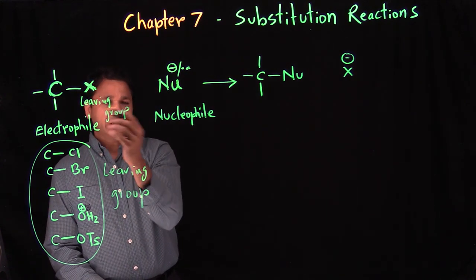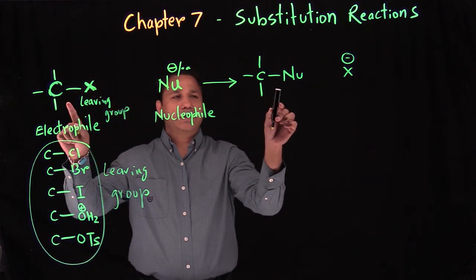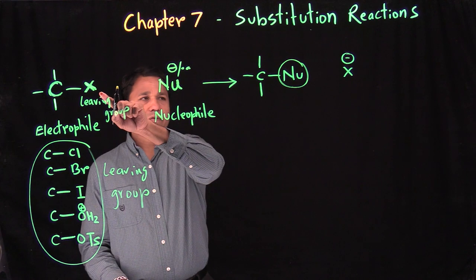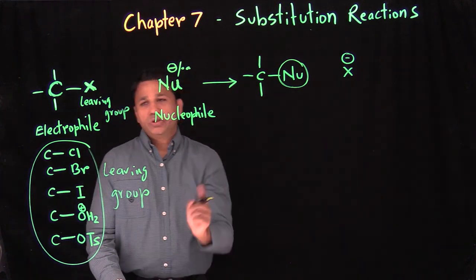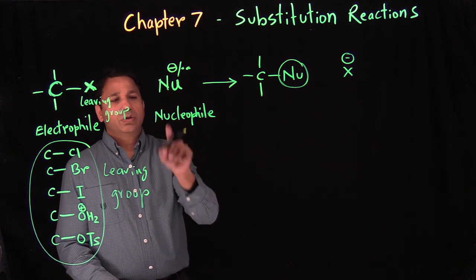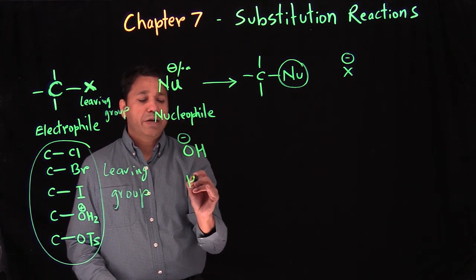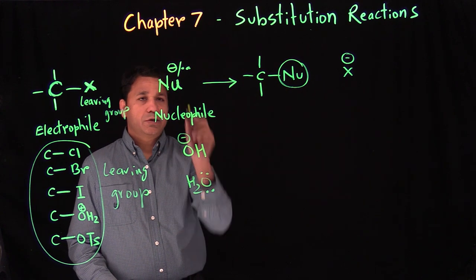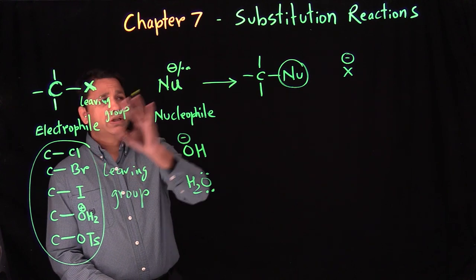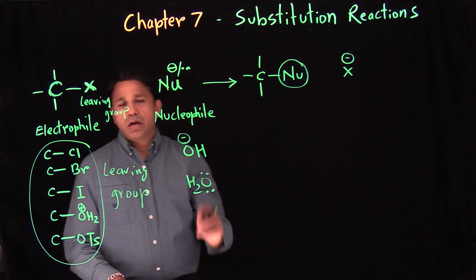The name 'leaving group' tells you it has to leave, and the nucleophile takes its place. Comparing starting material and product: the nucleophile has taken the place of the leaving group — that's why we call it a substitution. For example, the nucleophile can be OH minus (a negative charge) or water (an electron pair). Either can act as a nucleophile.